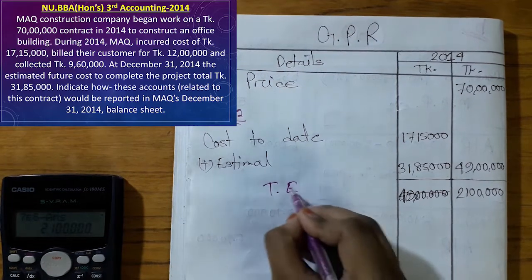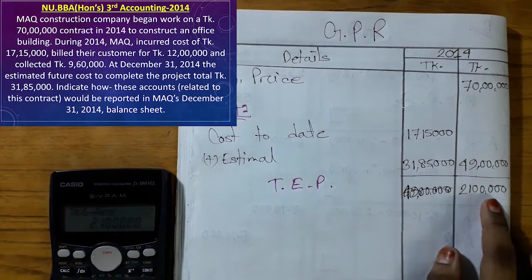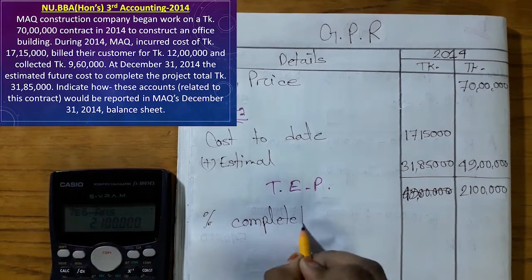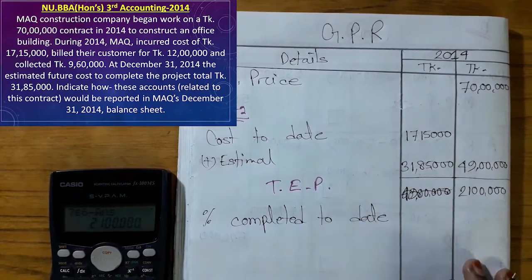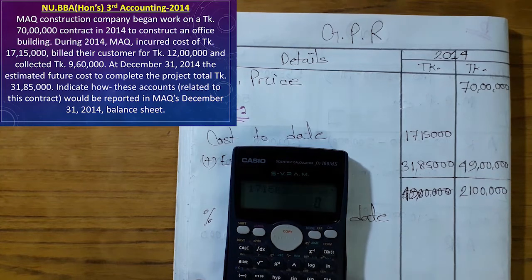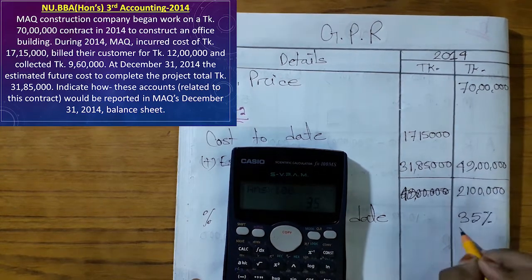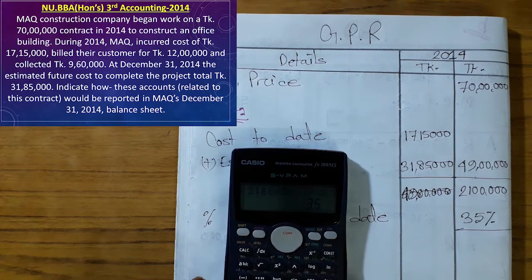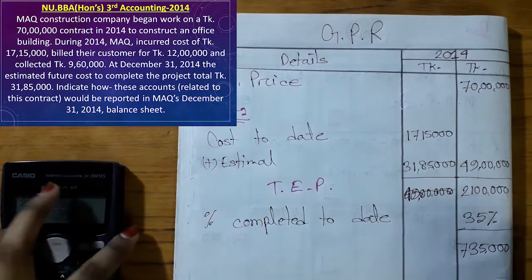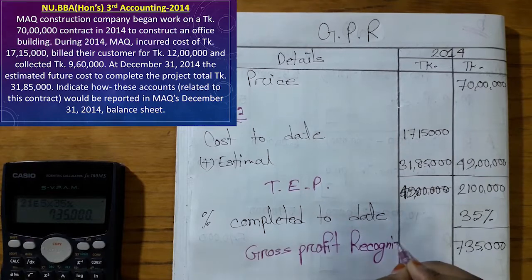Total estimated profit. Percentage completed to date: 33 and some percent. Percentage completed score.